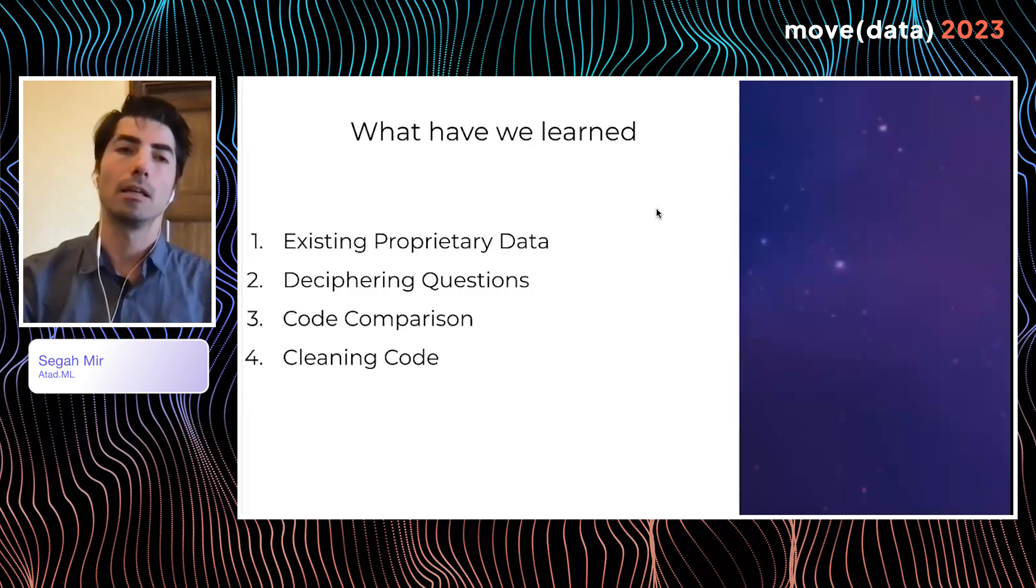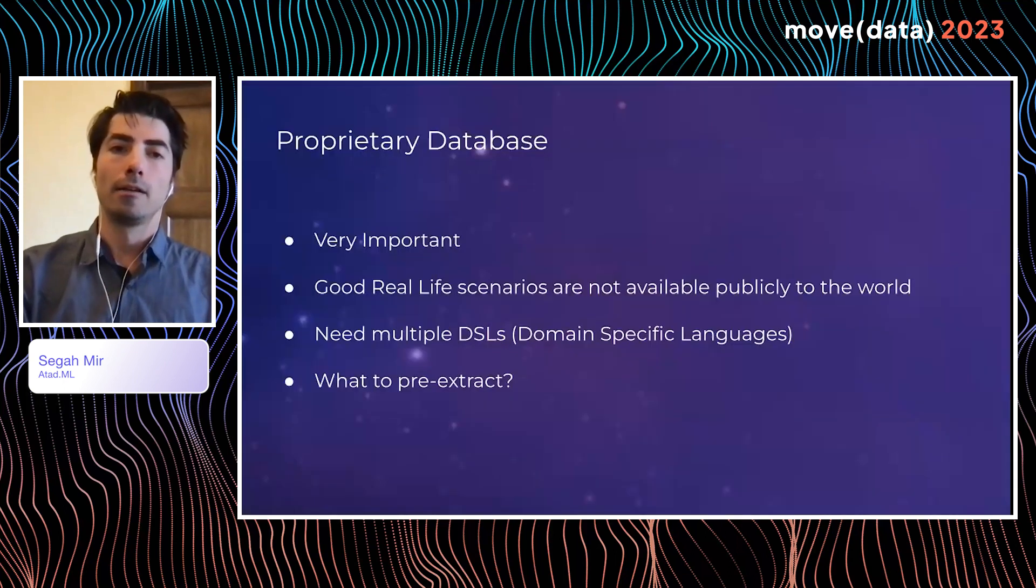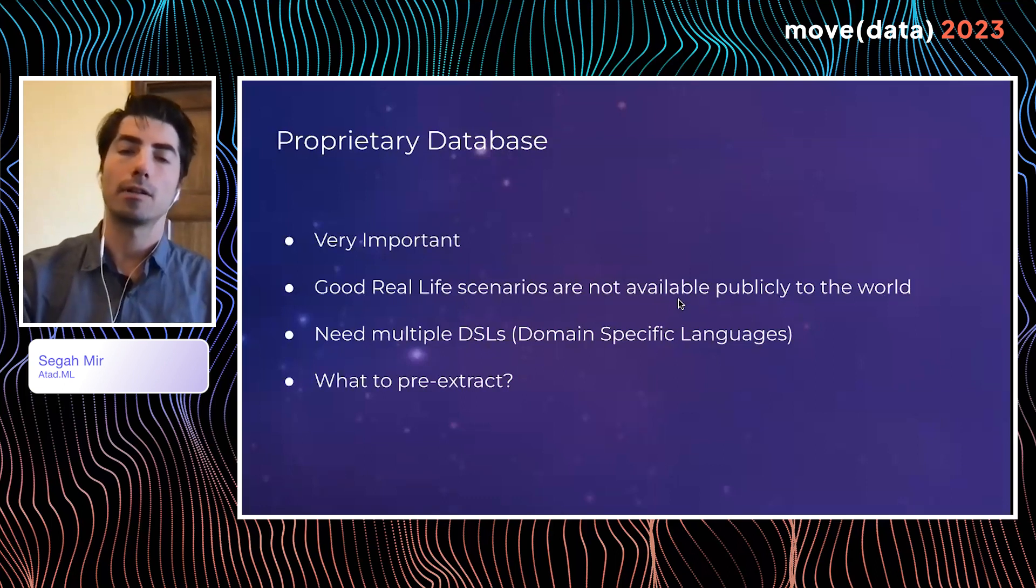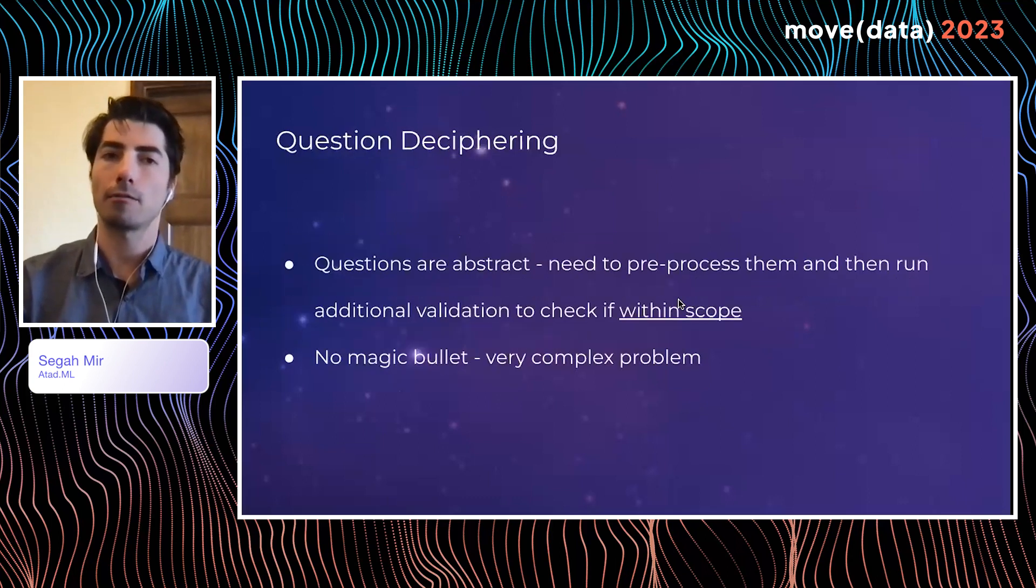So here's some high level things that I'm going to cover here in terms of what we've learned. First, proprietary database. For a production level system, if you want to produce production level code, it's very important to have your own proprietary database of real life scenarios that reflect how companies actually work with data. You also need to have support for multiple domain specific languages. Modern applications in data rely on not just SQL, but things like LookML, variety of semantic languages and that kind of stuff.